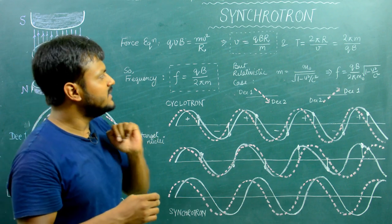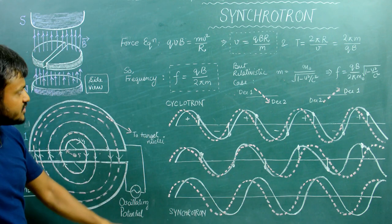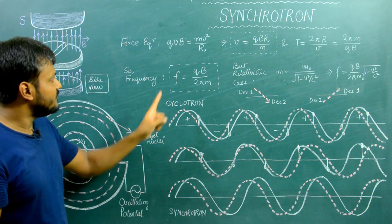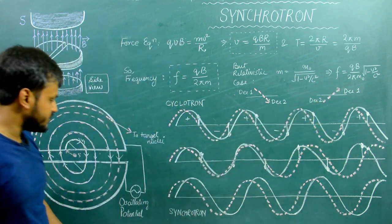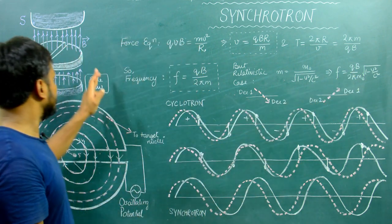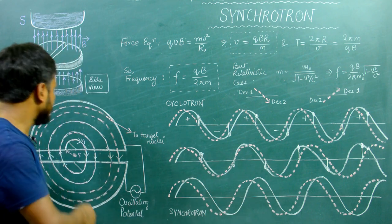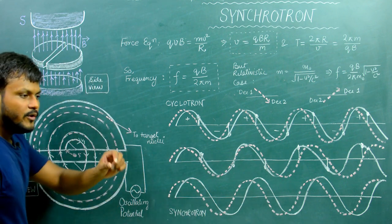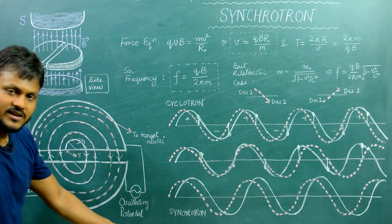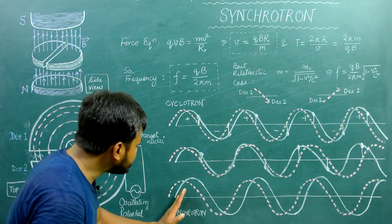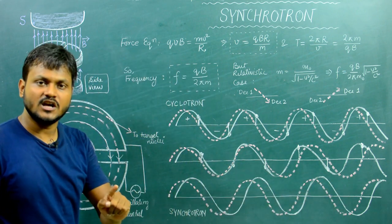This is where the synchrotron comes into the picture. The synchrotron overcomes the problem by changing either the frequency of the oscillating potential or the magnetic field. In a cyclotron, the frequency of revolution, the frequency of the oscillating potential, and the magnetic field were all constant. In a synchrotron, as the particle's revolution frequency starts decreasing due to relativistic mass increase, we also decrease the frequency of the oscillating potential or adjust the magnetic field, so that both waves remain in phase even as the particle approaches relativistic speeds.